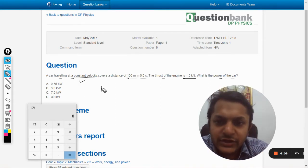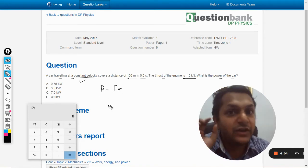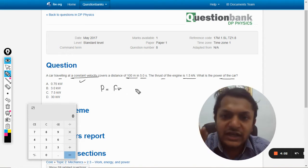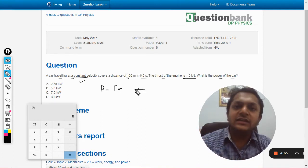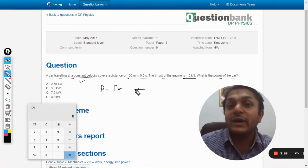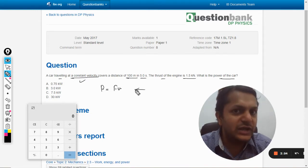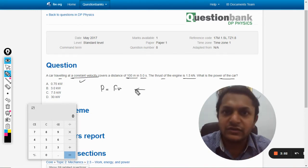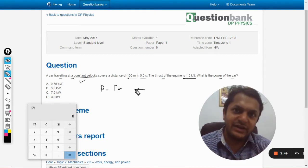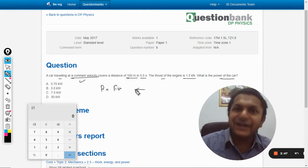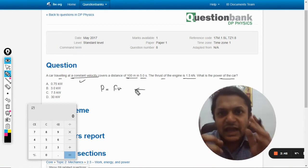So we know that the power is given by F into v, in such a case when velocity is constant. You see, ironically, the body is being acted upon by a force but still it is moving with a constant speed. It is not getting accelerated despite having a force.